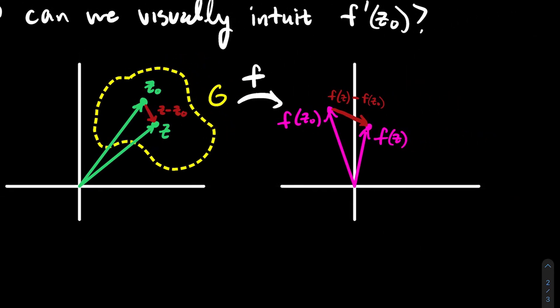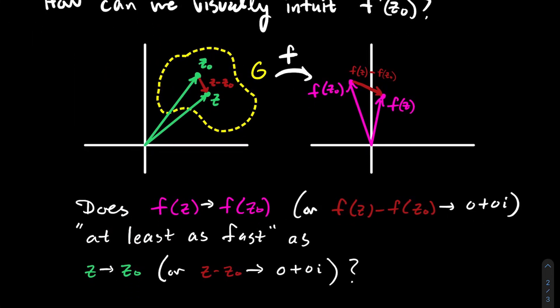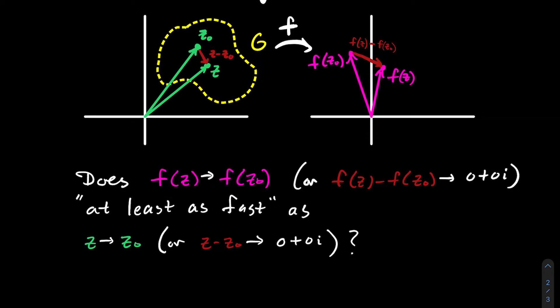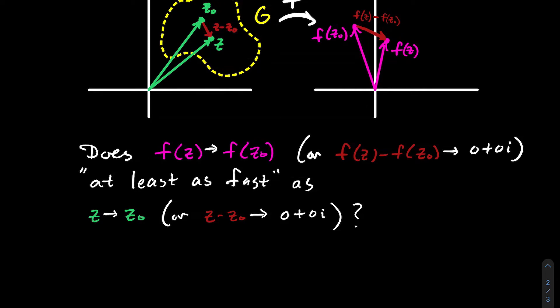What we're trying to answer is: when we take this limit, what does it mean for it to exist? Here's how I think of it: does f(z) approach f(z₀) — does the difference approach zero — at least as fast as z approaches z₀? In other words, does the numerator approach zero at least as fast as the denominator? Because if the denominator goes to zero much faster, you're essentially dividing by zero, and the limit won't exist. That's how I intuit the derivative: it's the rate of change between outputs and inputs.